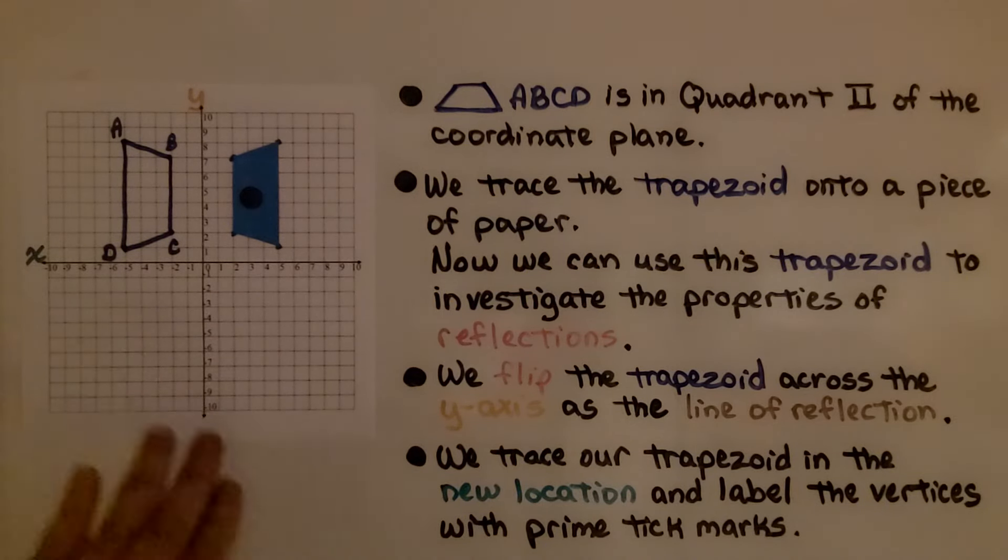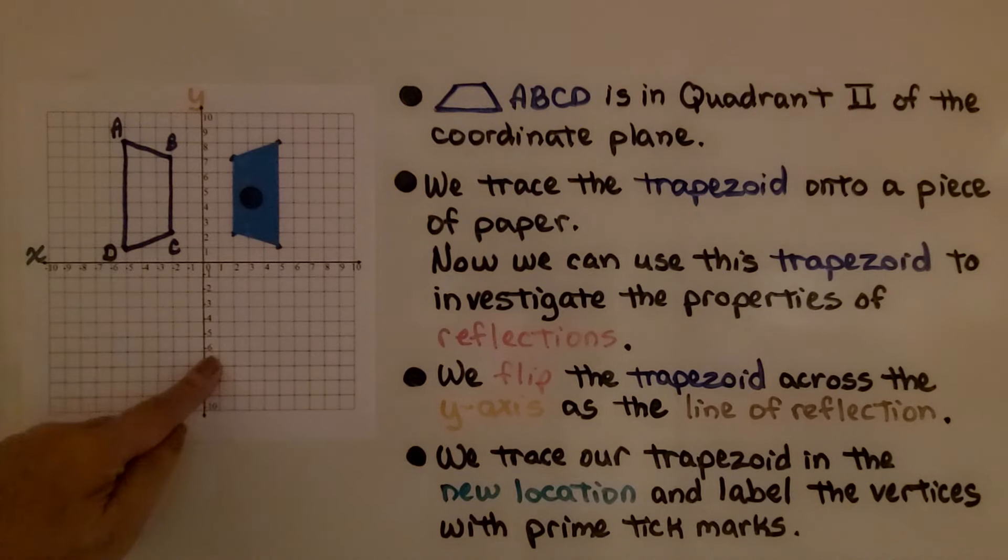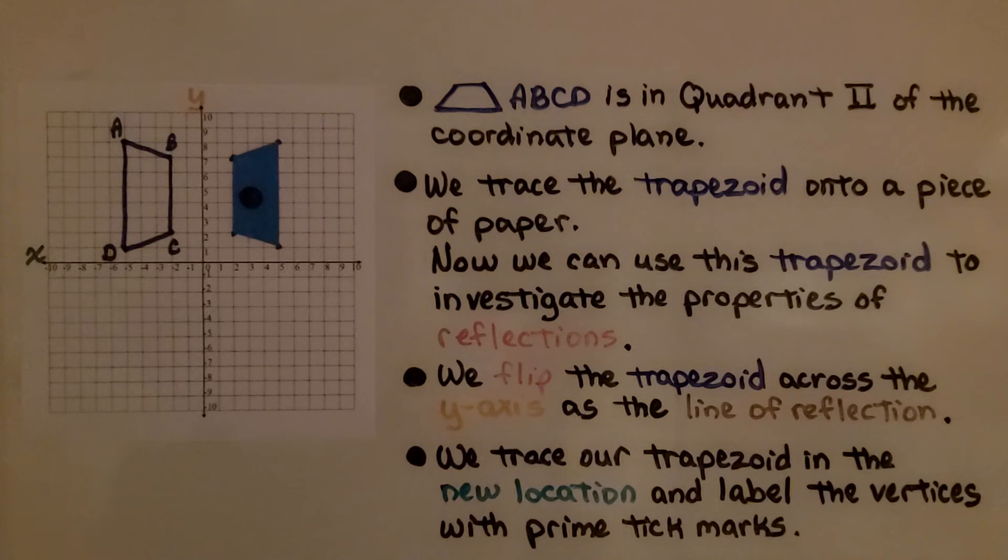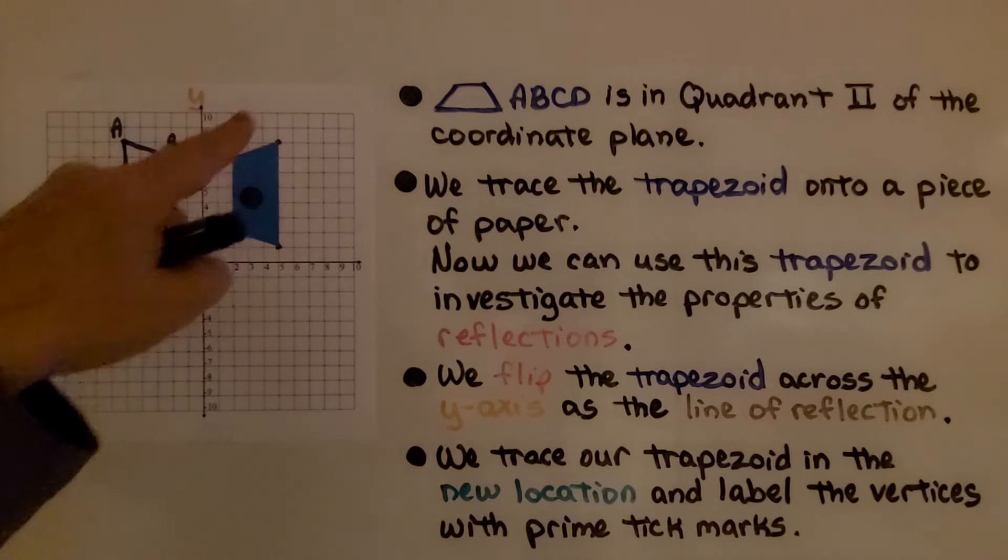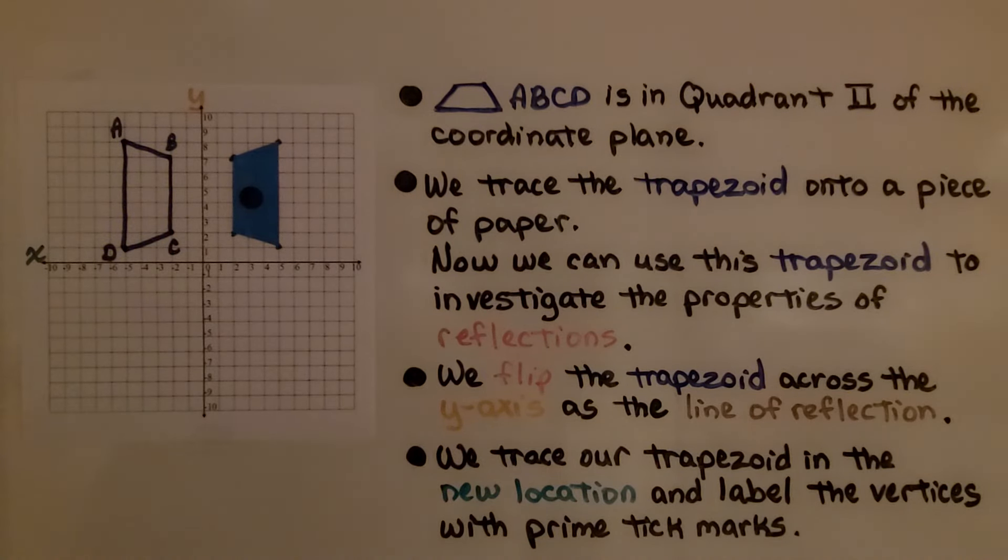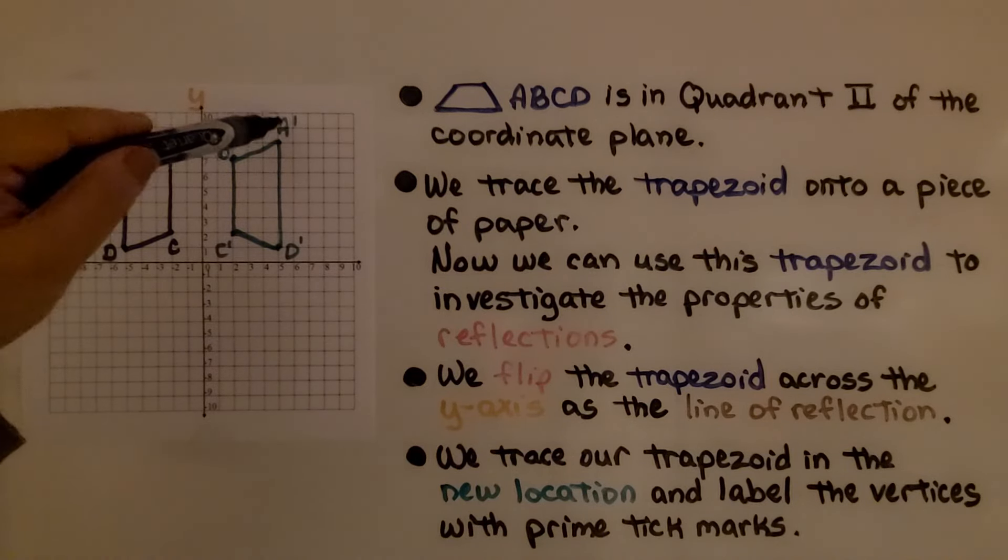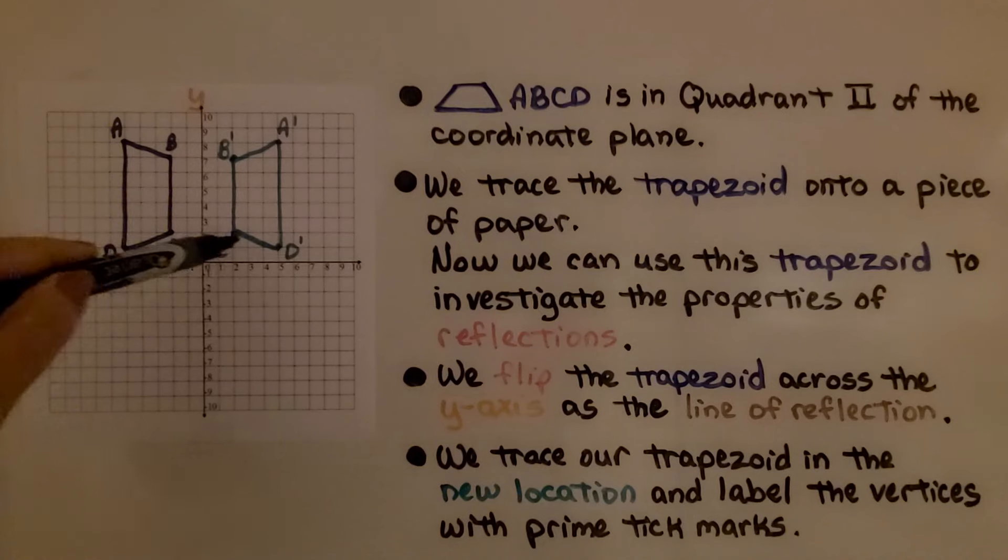We flip the trapezoid across this y-axis as our line of reflection, and we trace our trapezoid in the new location and label the vertices with prime tick marks. We've traced it, and now we've written A', B', C', and D' with our tick marks.